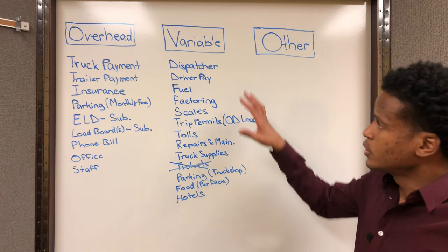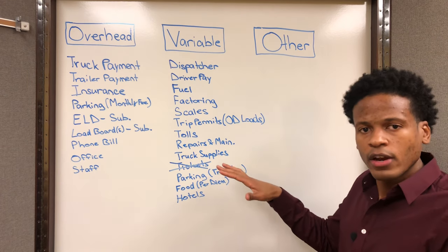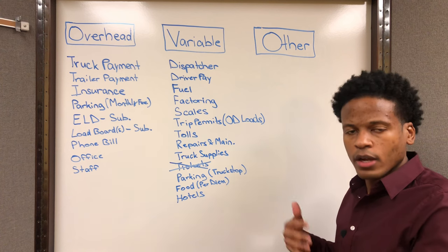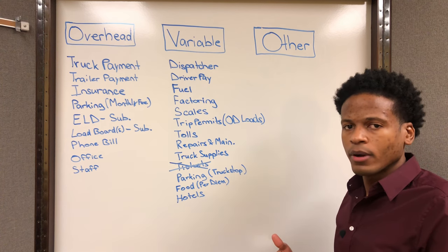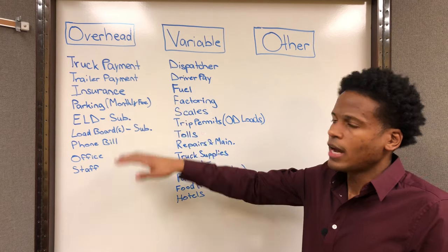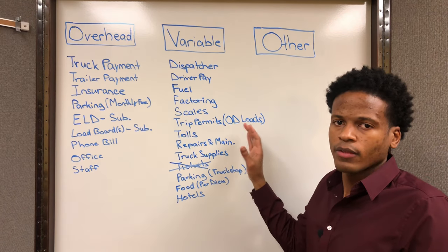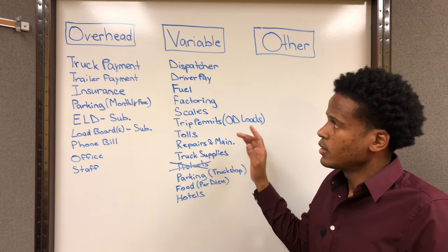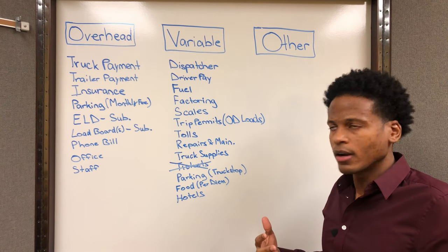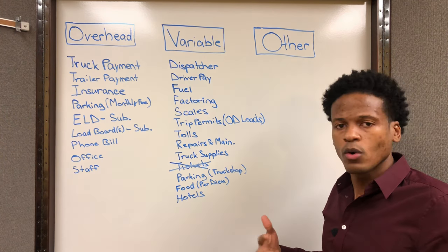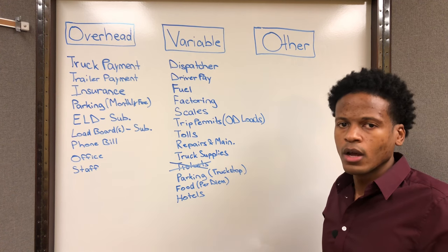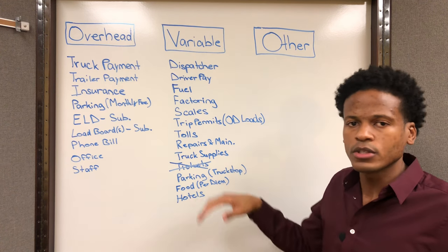These are all expenses that are going to vary — going up or down depending on how the truck is running that month. All the fixed or overhead expenses do not go up and down based on how the truck is running. Those are the two big types of expenses you need to be aware of when thinking about getting into trucking and becoming an owner-operator with your own authority.